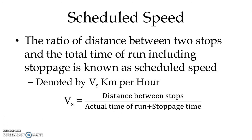Mathematically, V_S equals the distance between stops in kilometers divided by the actual time of run plus stoppage time. So when we include stoppage time as well, we get the scheduled speed.